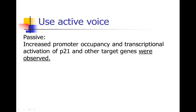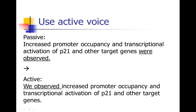Here's another example: "Increased promoter occupancy and transcriptional activation of P21 and other target genes were observed." Again, this is passive voice without a subject — we don't know who was doing the observing. Assuming it was the authors of the paper, we turn this into the active voice: "We observed increased promoter occupancy and transcriptional activation of P21 and other target genes." That's just a much easier sentence to read — a small change that makes a big difference in readability.